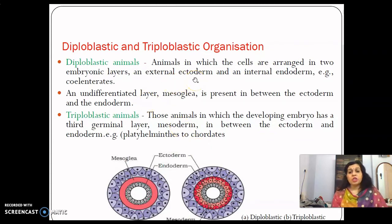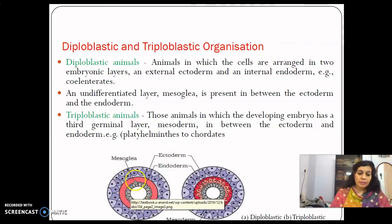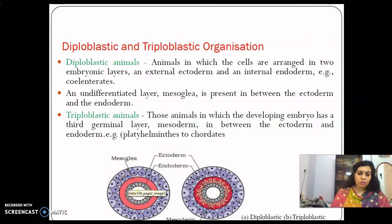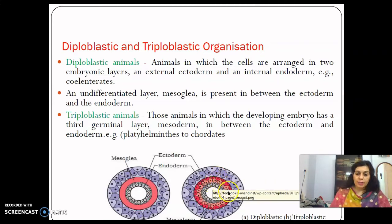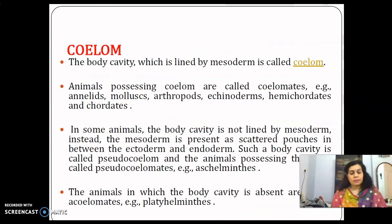Animals are also classified into diploblastic and triploblastic based on germ layers. Diploblastic animals have cells arranged in two embryonic layers — an external ectoderm and an internal endoderm. Cnidarians are an example; in the middle there is a non-cellular mesoglea. Triploblastic animals have a third germinal layer called the mesoderm between the ectoderm and endoderm. Platyhelminthes and other higher phyla are triploblastic.